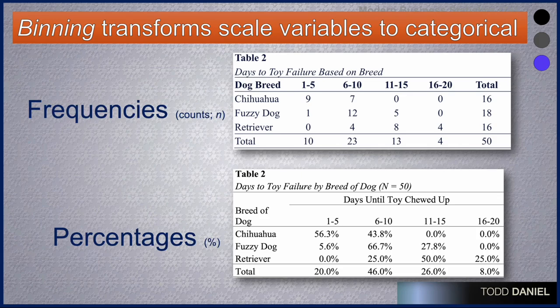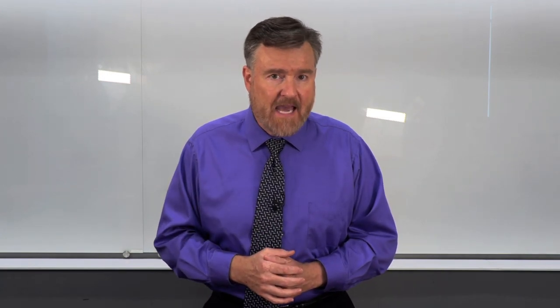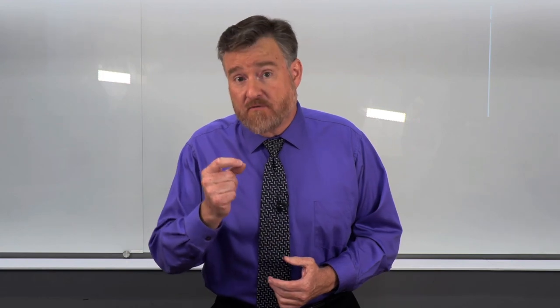This is the same data as before, only now I have changed the counts into frequencies by dividing each count by the total number of dogs in that category, working across rows. For instance, 56.3% of Chihuahuas chewed up their toys in the first five days, and 43.8% in between days six and ten. Likewise I could move across each row for fuzzy dogs or for Retrievers. Cross tabulation, in addition to being a lot of fun, can tell us something important about the relationship between categorical variables. Now we're going to learn to visualize those variables using two very specific types of bar charts.